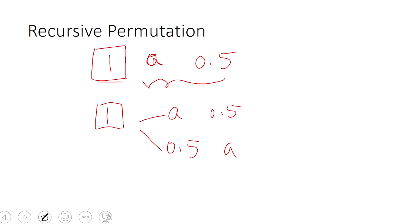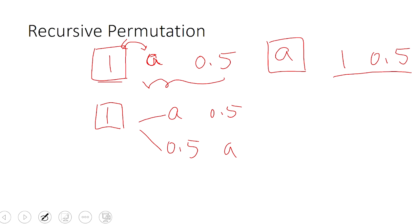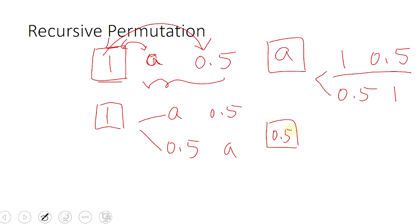So we get 1 'a' 0.5 and 1 0.5 'a'. We can do the same thing by swapping 1 and 'a', fixing 'a' as the first element, and permuting 1 and 0.5 — giving 'a' 1 0.5 and 'a' 0.5 1. Then swap the first element with 0.5, fix 0.5, and permute 1 and 'a', giving 0.5 1 'a' and 0.5 'a' 1. This is the basic idea of recursive permutation.